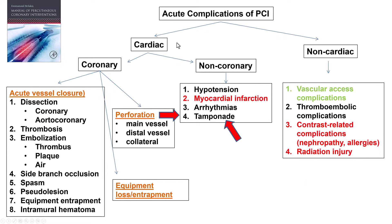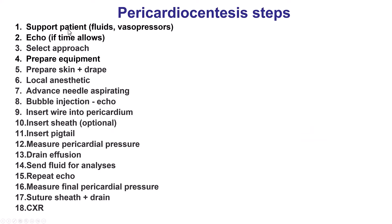In the setting of PCI, pericardiocentesis is usually needed when the patient develops tamponade, which in turn is caused by coronary perforation. There are different types of perforation discussed in separate videos. These 18 steps apply both to pericardial effusion caused by coronary perforation, but also to drainage of non-perforation-related pericardial effusions.